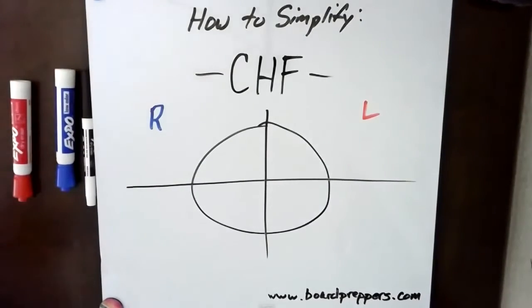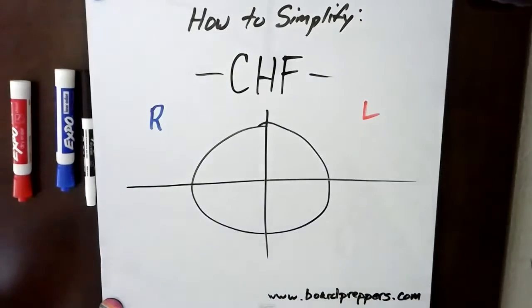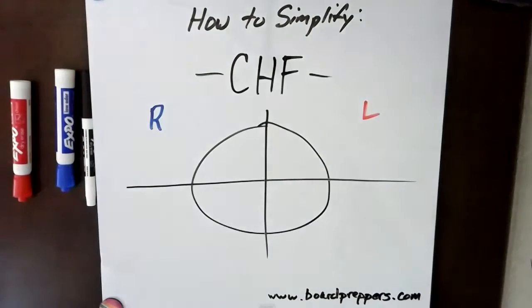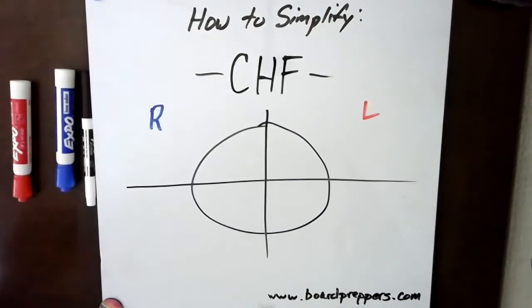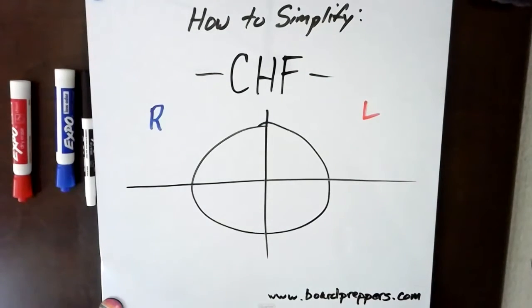Hello everybody, this is Scott Solomon with Board Preppers, and today I'm going to talk about how to simplify congestive heart failure. We need to start by identifying the fact that when we're dealing with pathology of the heart, it is a systemic problem — it's going to affect the whole body bilaterally and equally. Gravity does play a part in showing off some symptoms, and I'll talk about that in a little more detail in just a second.